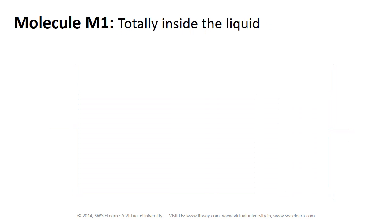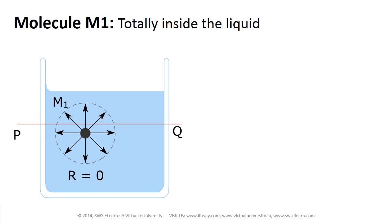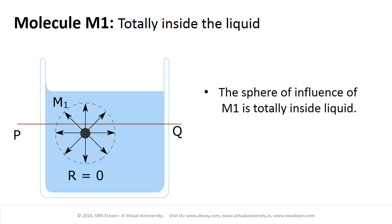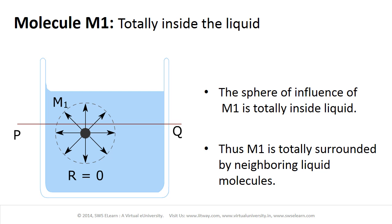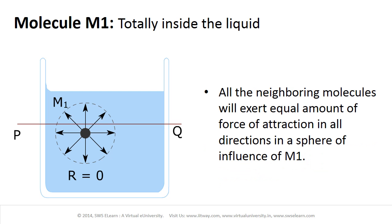Let us now consider the first situation where the molecule lies totally inside the liquid. The sphere of influence of M1 is totally inside the liquid. Thus, M1 is totally surrounded by neighboring liquid molecules. All the neighboring molecules will exert equal amounts of force of attraction in all directions within the sphere of influence of M1.